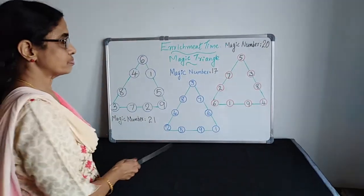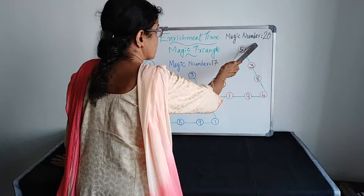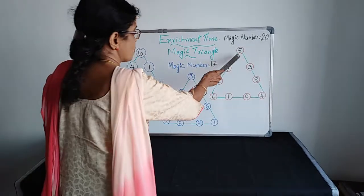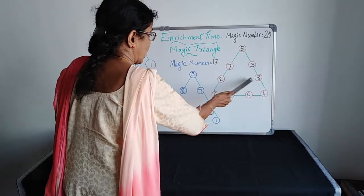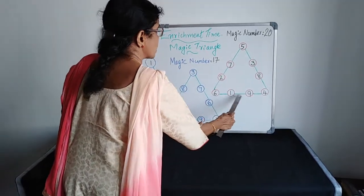Here we have to make Magic Number 20. The first, the topmost number 5. Again, 7, 3, 2, 8, 6, 1, 9, 4.